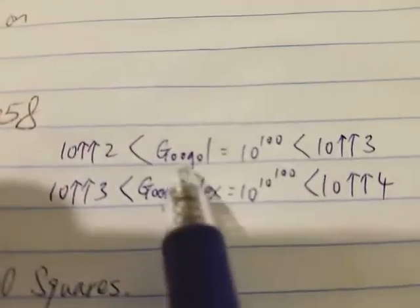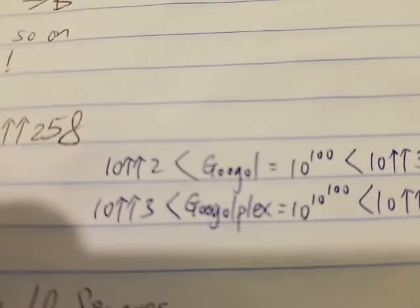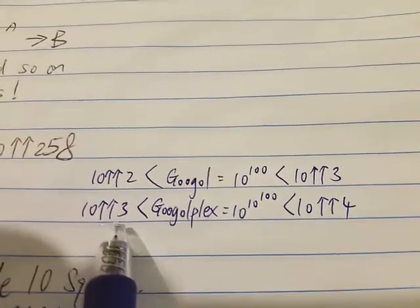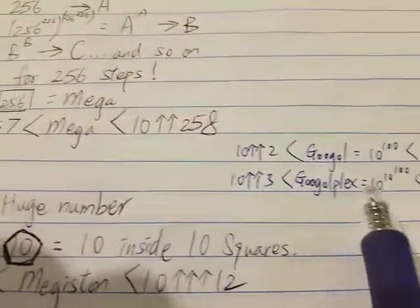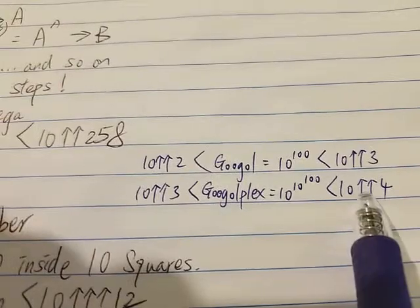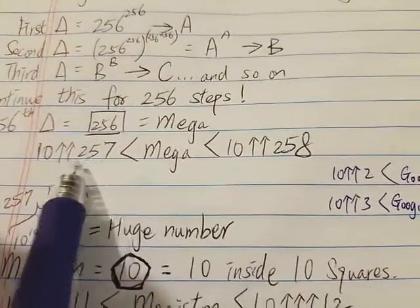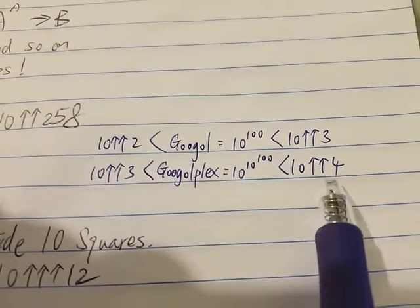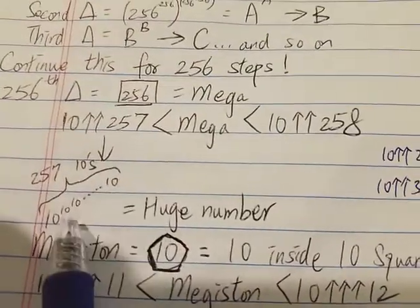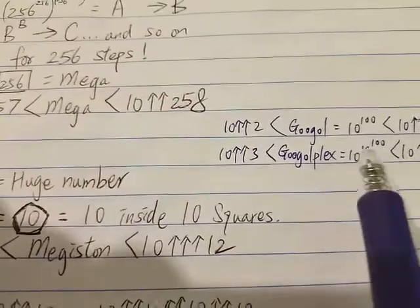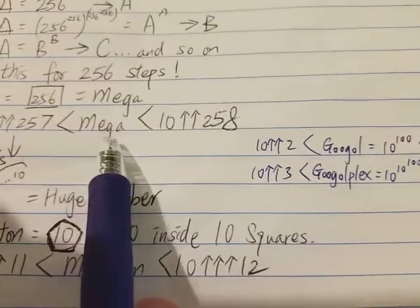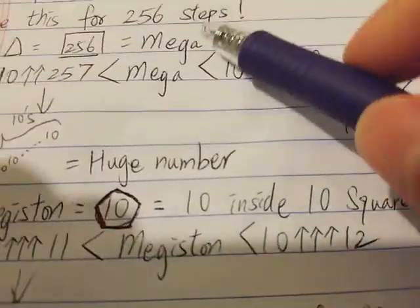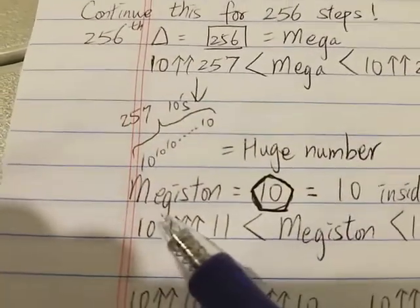Remember, the Googol is between 10 two-arrow 2 and 10 two-arrow 3, and the Googolplex is between 10 two-arrow 3 and 10 two-arrow 4. The Googolplex power tower only has four tens in it, but Mega has 257 levels. So we can conclude that Mega is much, much bigger than the Googolplex.